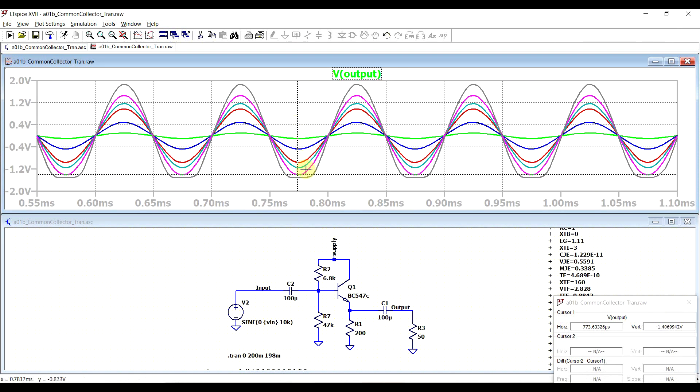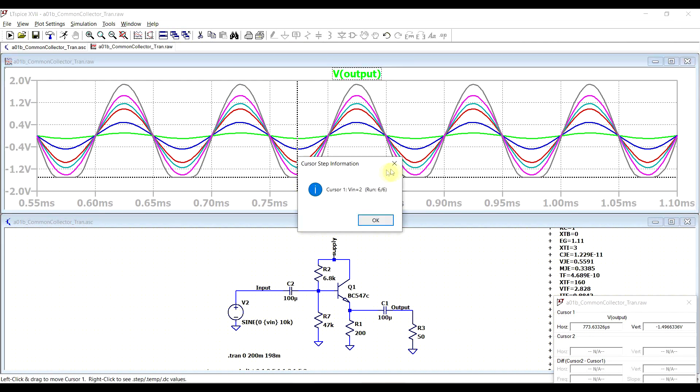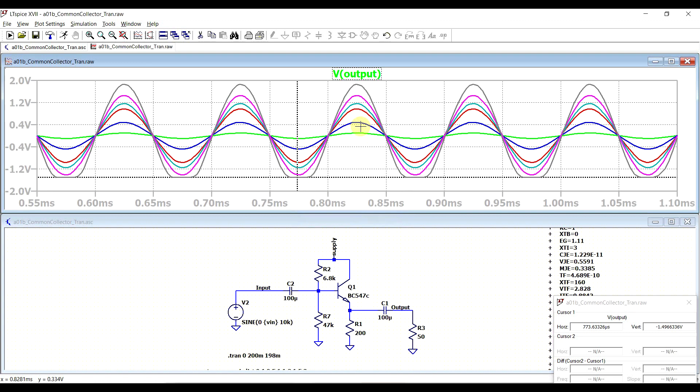We can see that now the last signal that gets amplified fairly well is the 1.5 volt one. Only the 2 volt signal is being distorted on the negative side, and all of the signals are looking good on the positive side.